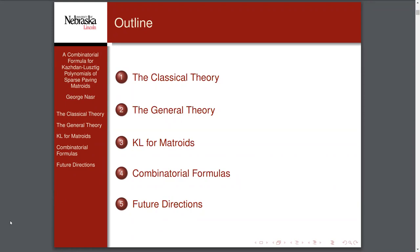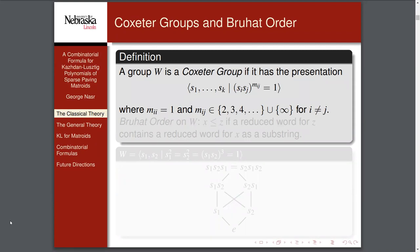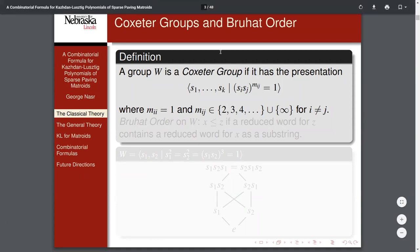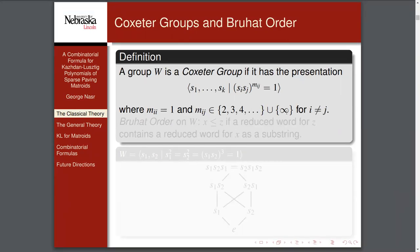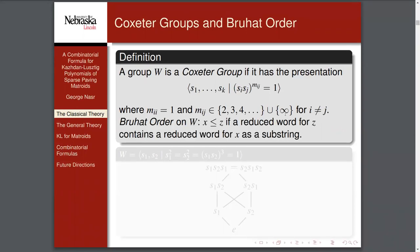Let's talk about classical stuff. To talk about that, I need to introduce Coxeter groups. Coxeter groups are just a group with the following presentation. You've got a bunch of generators, and the relations have this form where if the two parameters are the same you get one, otherwise the values can be anything. Infinity means there is no relation between those two generators. You can induce a partial order called the Bruhat order on these elements, and basically x is smaller than y if a reduced word for z contains a reduced word for x as a substring.